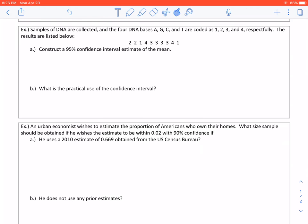Example two says samples of DNA are collected, and the four DNA bases A, G, C, and T are coded as 1, 2, 3, 4, respectively. And the results are listed below. Construct a 95% confidence interval to estimate the mean. So we are dealing with the mean this time.